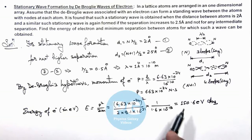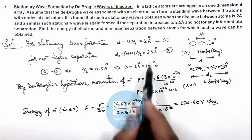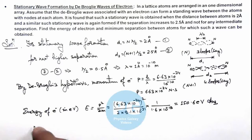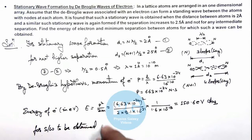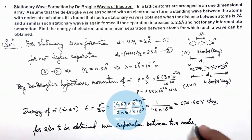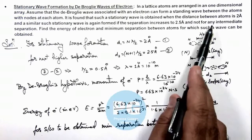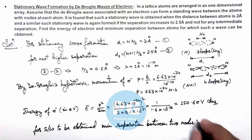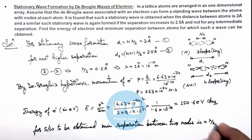Here, if we wish to calculate the minimum separation between atoms for which such a wave can be obtained, we can write that for a stationary wave to be obtained, the minimum separation between two nodes - because we are given that on every atomic site a node is formed - this we know is λ/2. And the value of λ/2 is 0.5 angstrom, that is another result of this problem.